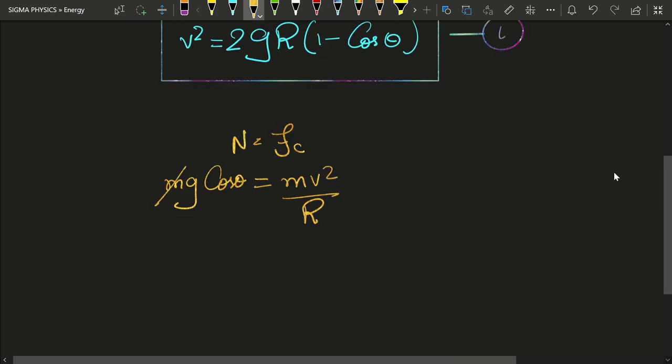Again, the m's are going to cancel. So we will be left with v squared equal to g r cos theta. Let me call this equation number 2.